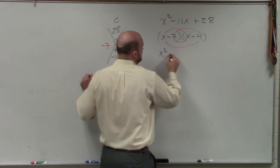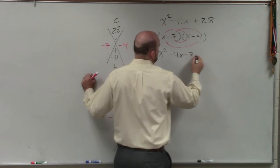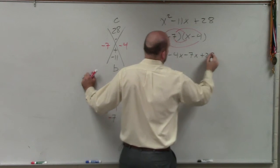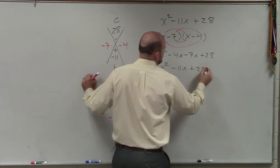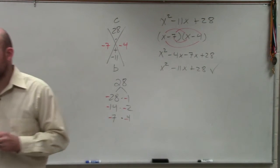x squared minus 4x minus 7x plus 28. x squared minus 11x plus 28. Right? You can always go back and check your work.